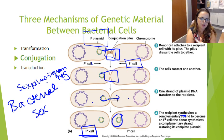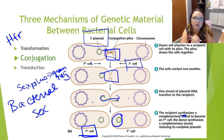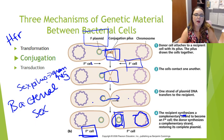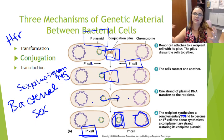High frequency recombination, or HFR, occurs if the F plasmid integrates into the donor bacterium's chromosome rather than remaining extrachromosomal. During conjugation in this case, the bacterial genome adjacent to the integrated plasmid is transferred to the recipient. This is another way genetic material can get directly into the chromosome.